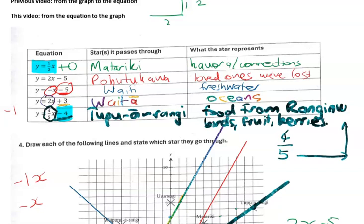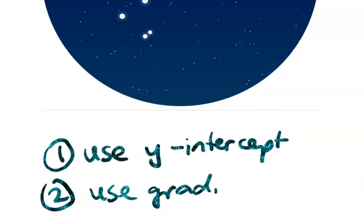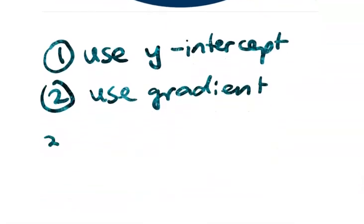So going over the method that we need to use for drawing the graph from the equation. The steps are. First, use the y-intercept. And second, use the gradient. And then that's going to give me my points. And then we're going to join the points. Thanks for watching.